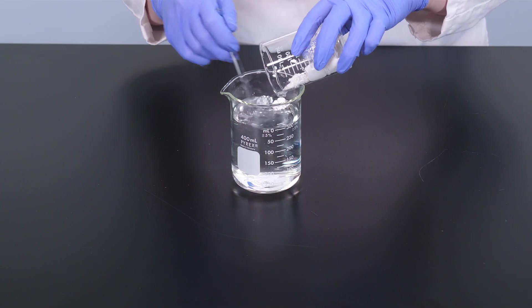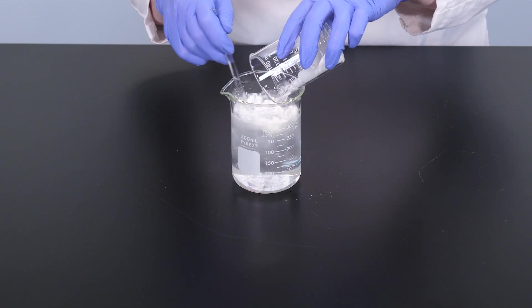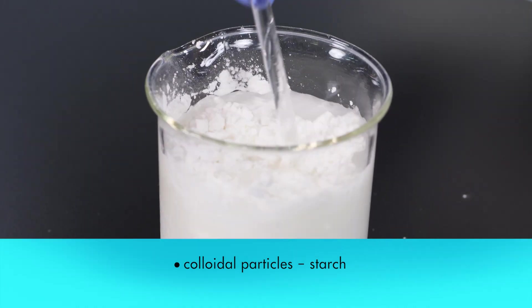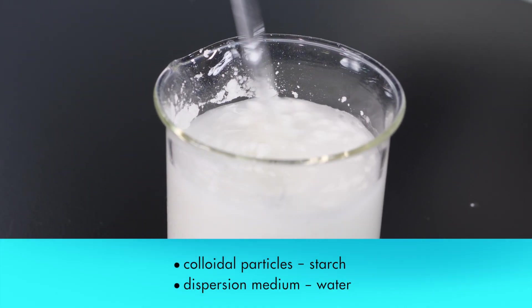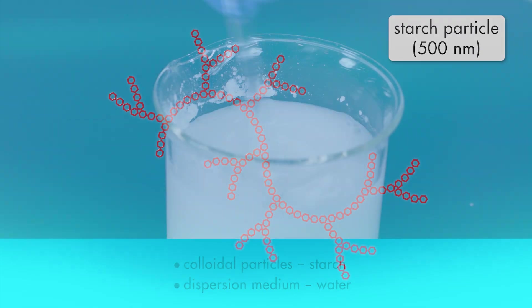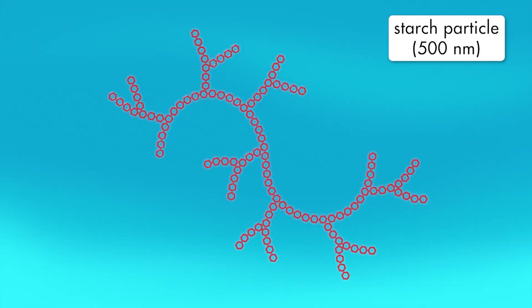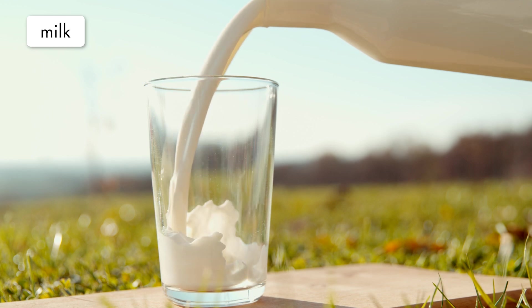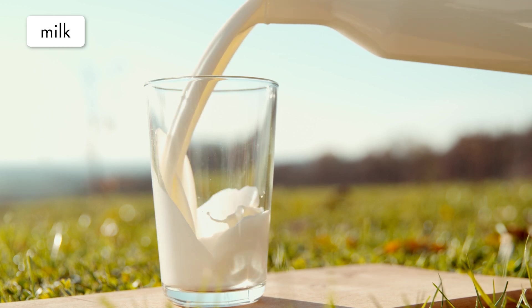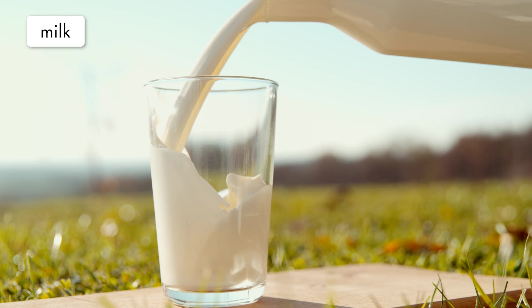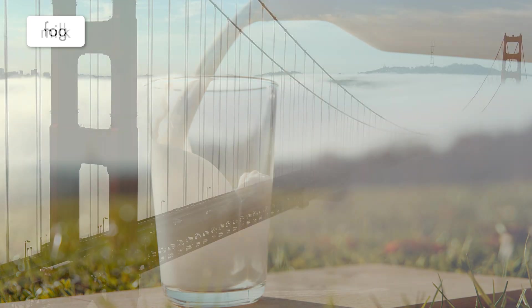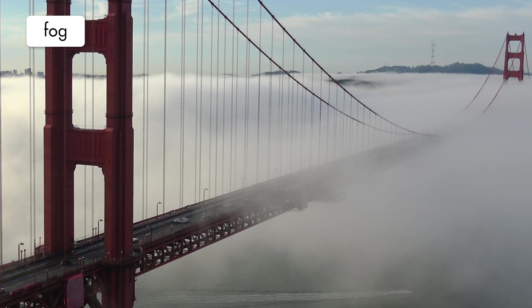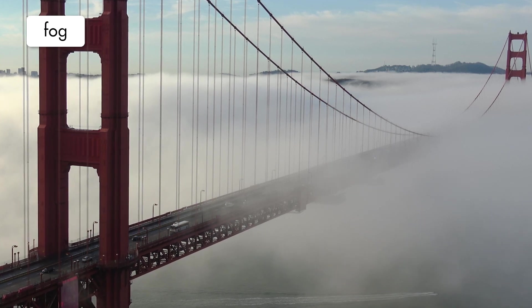Let's see what happens when we mix starch and water. The colloidal particles are starch and the dispersion medium is water. The starch particles in the colloid are approximately 500 nanometers across. Milk is another common colloid. Milk consists of particles of liquid fat dispersed in a dispersion medium of water. Fog is a colloid made up of tiny droplets of water dispersed in air.